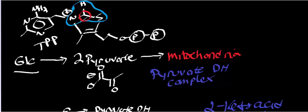Now let's look at the mechanism. The parts I've circled in blue are what I'll draw in the mechanism, since the other parts of the molecule don't participate. The carbon circled in red is the active nucleophile that attaches to pyruvate.